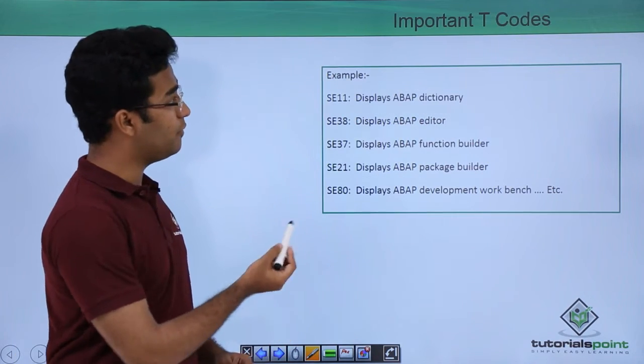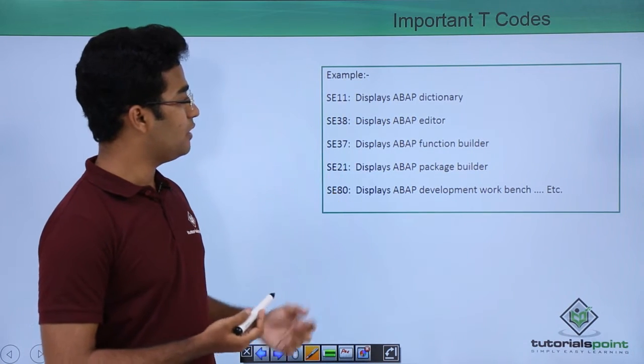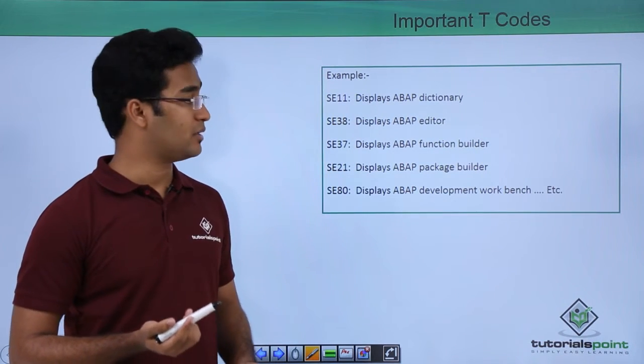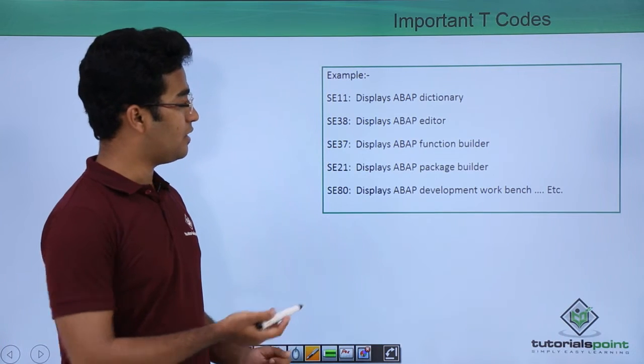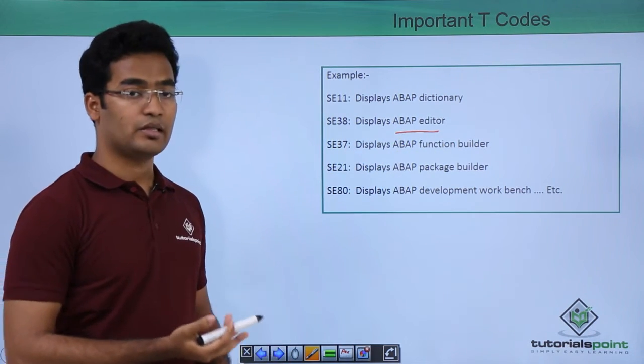We will provide a list of important T codes that SAP ABAP users need. SE11 is used for displaying the ABAP data dictionary, and as I mentioned, ABAP editor screen can be accessed through SE38.